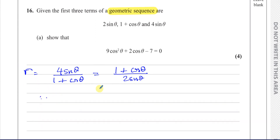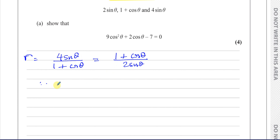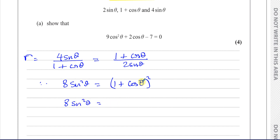Cross-multiplying gives us 4 sin θ × 2 sin θ = 8 sin²θ, equal to (1 + cos θ)². Expanding the right side: squaring the first term gives 1, doubling the product gives 2 cos θ, and squaring the last term gives cos²θ.